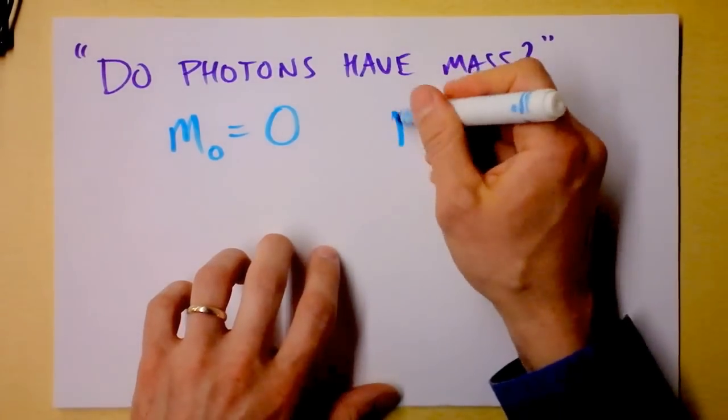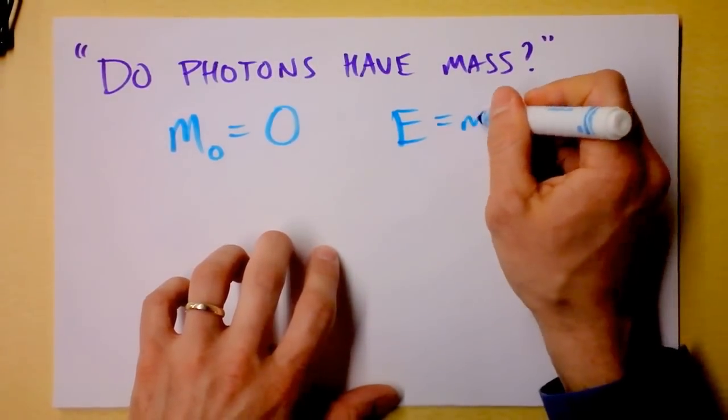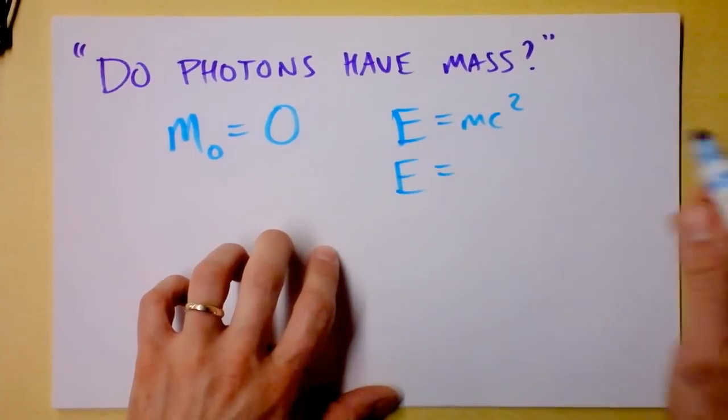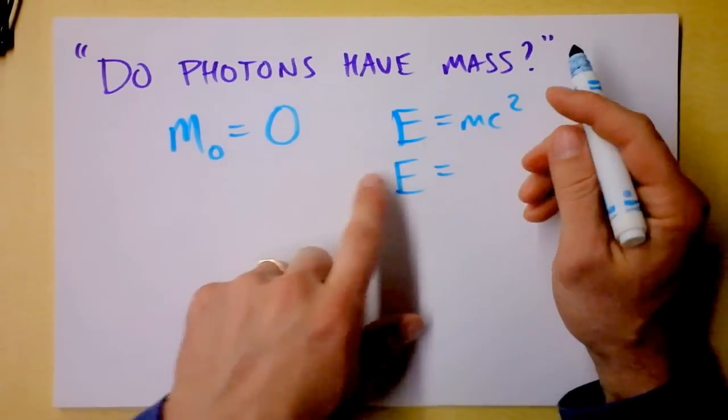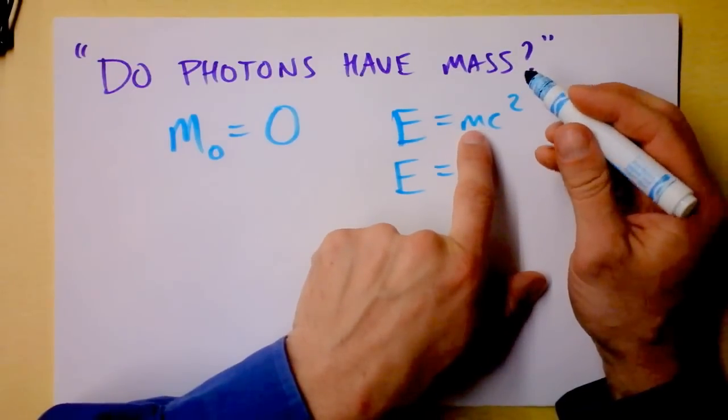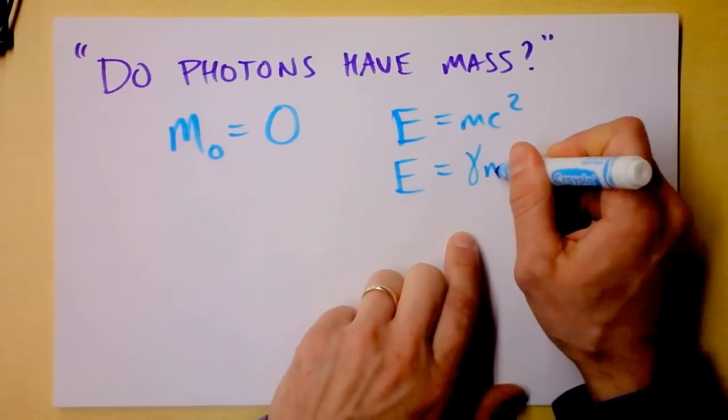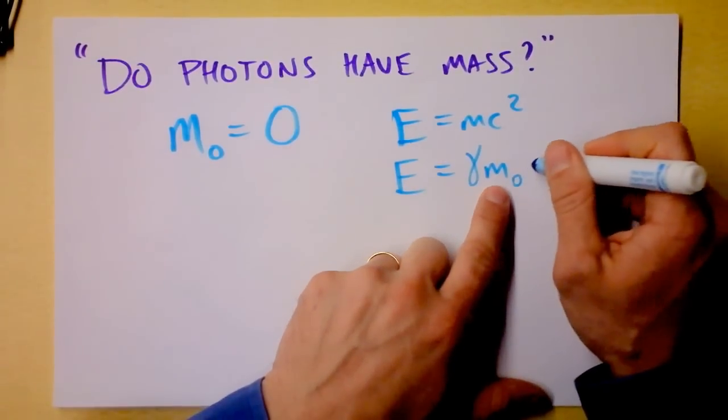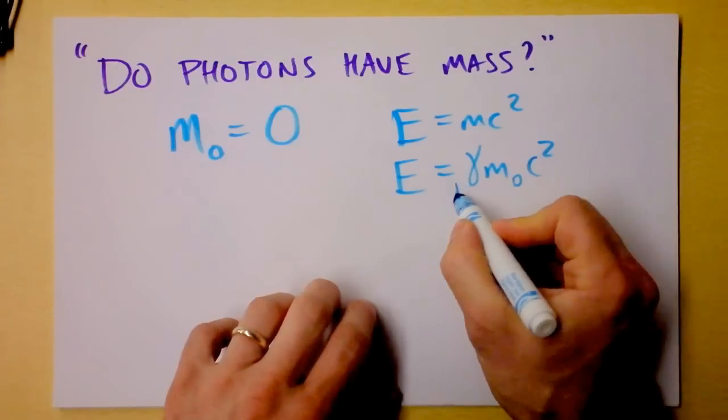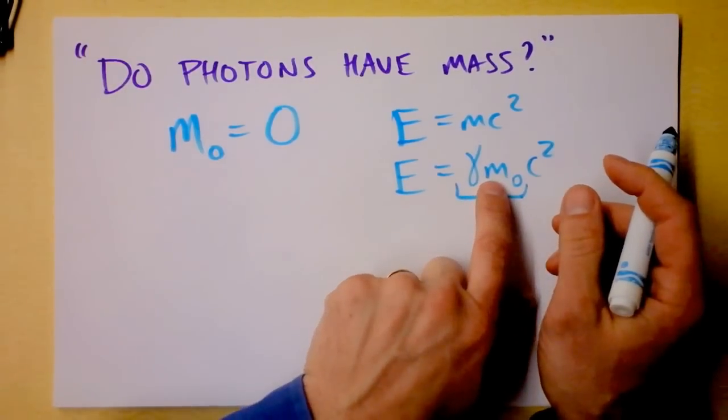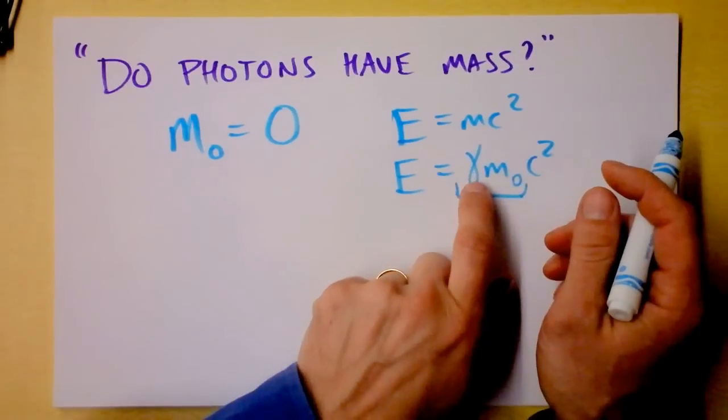And you remember, maybe somebody told you once, that E is MC squared. When I write down E is MC squared, what I mean is E is M, but M is gamma times M-naught, and that's M-naught times C squared. So what I'm saying is this stuff right here is real mass, it's rest mass times gamma.